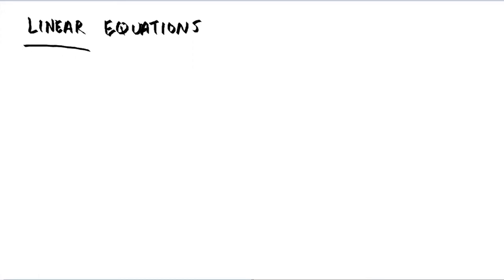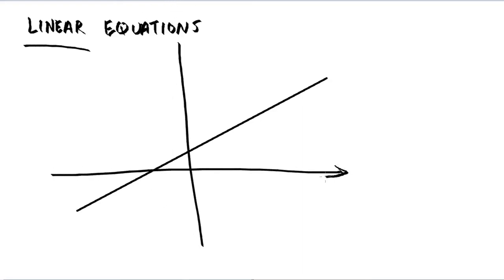So a linear equation, when you think of that, you probably think of some sort of line that looks like maybe this. And you have a Cartesian coordinate plane with your x-axis right here and your y-axis right over here. And this here is your equation, this is your line.